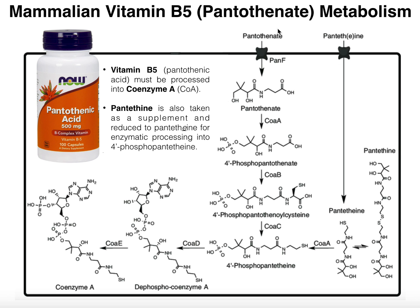Pantothenate is an essential B vitamin, meaning we cannot actually generate pantothenate through biosynthetic pathways. We rely completely on getting it through the diet. Pantothenate is not the active form of vitamin B5. Vitamin B5 is going to be processed into coenzyme A, and one other thing we'll talk about in a little bit. But we have the enzymes to process pantothenate into CoA, but we have to get the pantothenate first. In some ways, you could consider that the precursor.